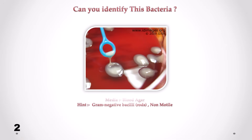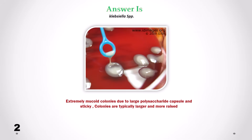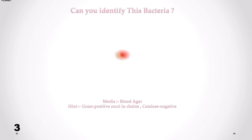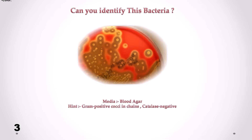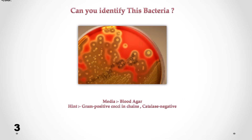Can you identify this bacteria? Correct answer is Klebsiella. We can see extremely mucoid colonies due to large polysaccharide capsule, and sticky colonies are typically larger and more raised.